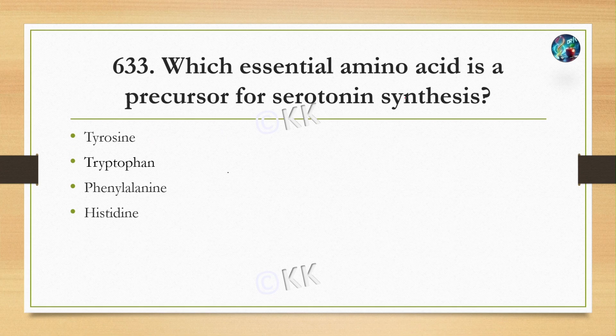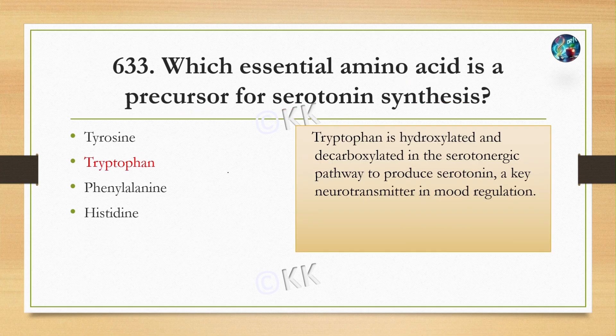Which essential amino acid is a precursor for serotonin synthesis? Option A: tyrosine. Option B: tryptophan. Option C: phenylalanine. Option D: histidine. The correct answer is option B: tryptophan. Tryptophan is hydroxylated and decarboxylated to produce serotonin.